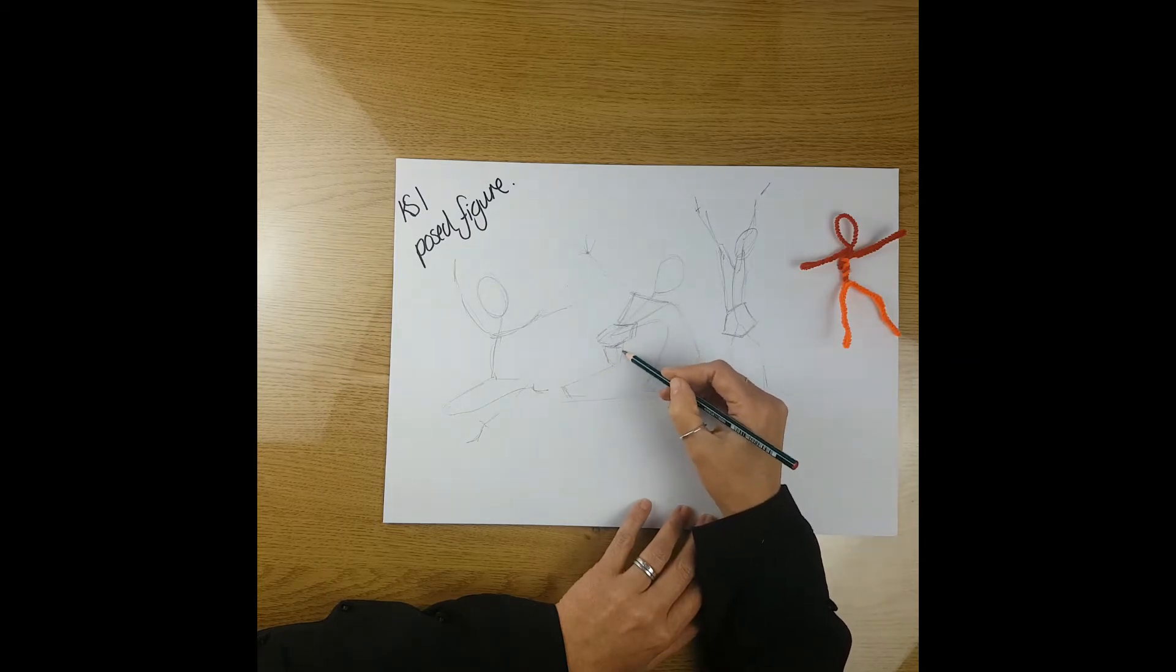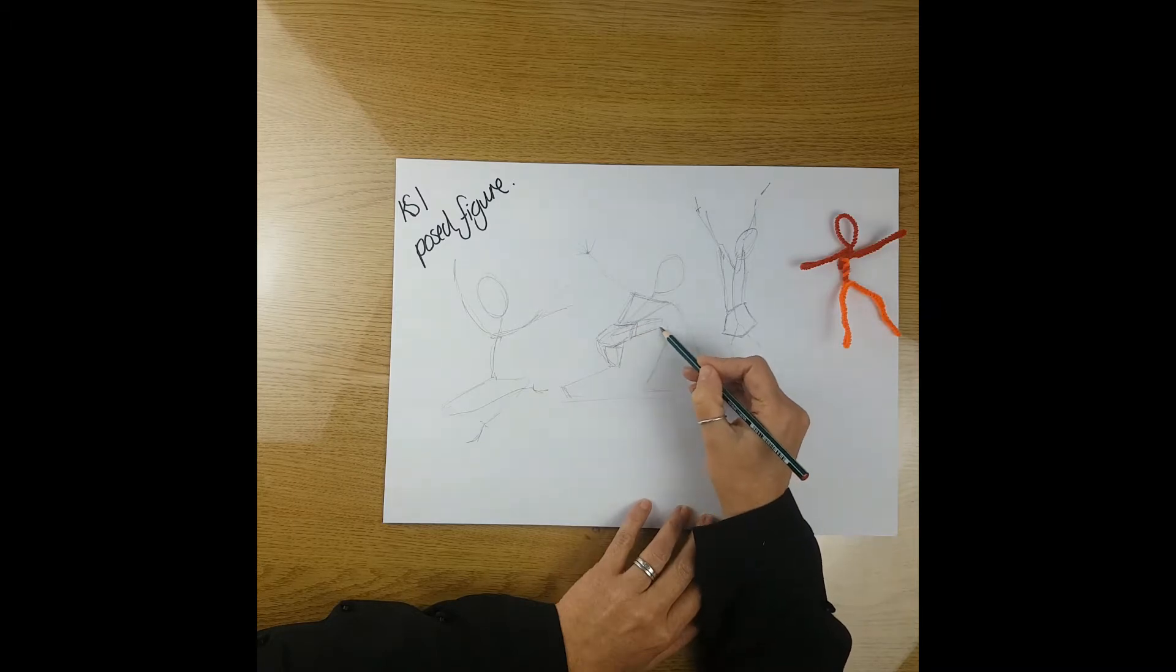Try and box out that body. You can start adding on the shapes of the legs. They start wide and get thinner at the knees, and your knees are a little bit like a ball, a little bit round.